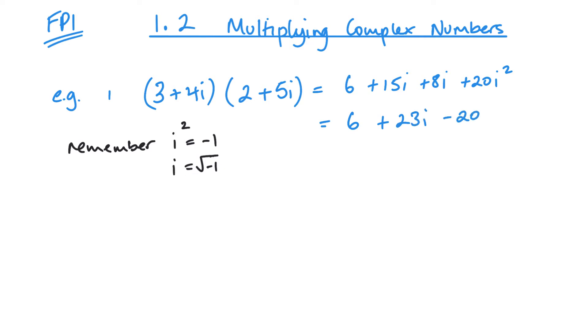So we've got 6 plus 23i. Now if i squared is negative 1, this is going to become negative 20. 20 times negative 1, negative 20. So now we've got negative 14 plus 23i as our complex number.